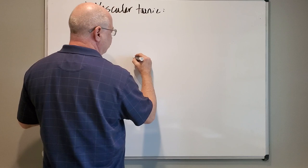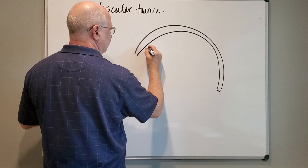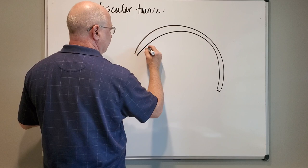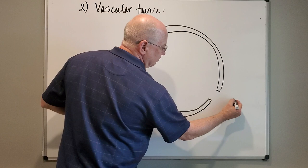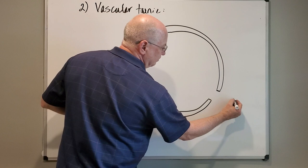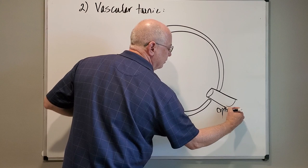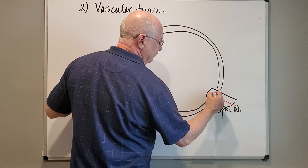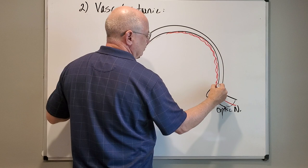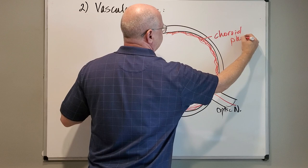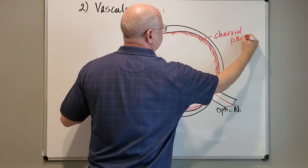The fibrous tunic arches around toward the back of the eye. There's a little border between the sclera and the cornea called the corneal limbus. The fibrous tunic wraps around, and a little inferior to the midline is where the optic nerve enters the eyeball. Entering through the optic nerve are blood vessels that run just deep to the sclera — this layer of blood vessels is what we call the choroid coat, or choroid plexus of the eye, and it delivers blood to the eyeball.